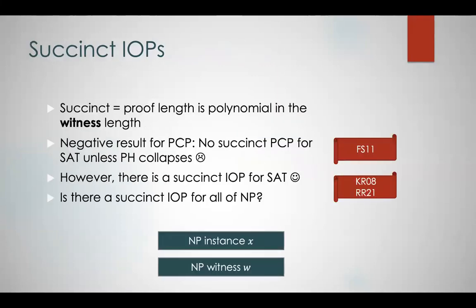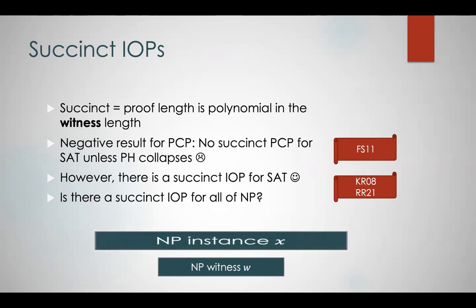Let's go back to the first word in the title: succinct. A succinct proof is essentially a short proof. When we're talking about NP relations, a succinct proof is a proof whose length is polynomial in the witness length, rather than in the instance length. For general NP relations, usually the instance is much larger than the witness, so a succinct proof means a short proof.